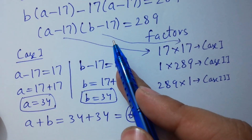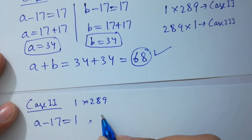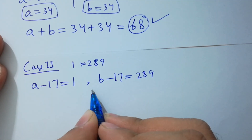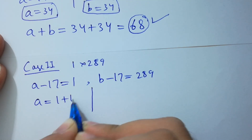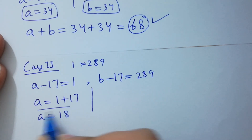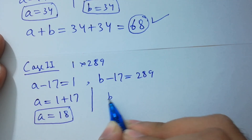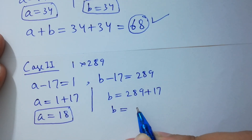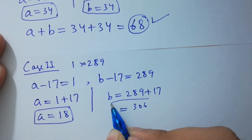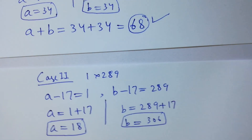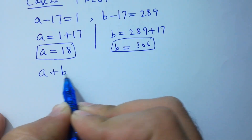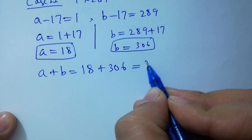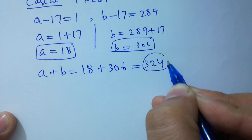Case 2 is 1 times 289. So a minus 17 equals 1, giving a equals 18. And b minus 17 equals 289, giving b equals 289 plus 17, which is 306. So a plus b equals 18 plus 306, which equals 324.